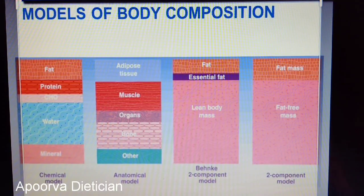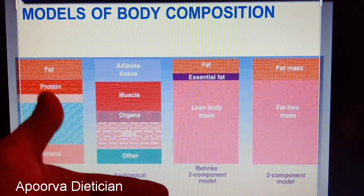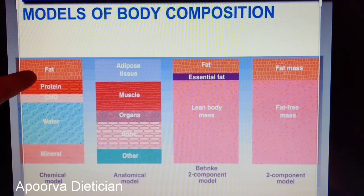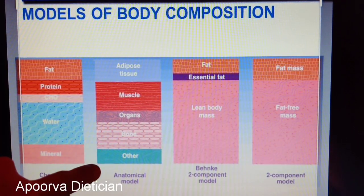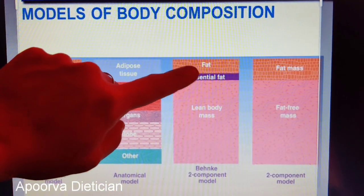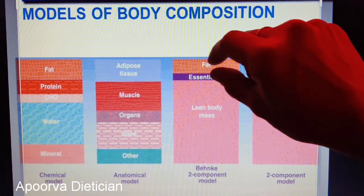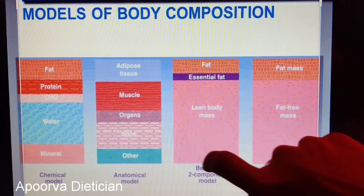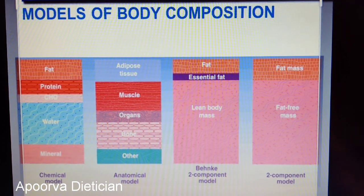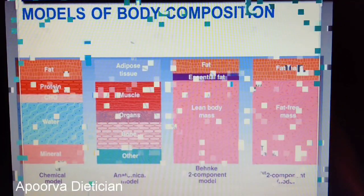Here are different types of models for body composition. Body composition is what all components form a body — there is the chemical model, anatomical model, and two-component models. In the chemical model you can observe different nutrients; in the anatomical model you find tissues, muscles, organs, and bones. You can see there is a distinction between storage fat and essential fat, and lean body mass. Essential fat plus storage fat forms the fat mass, and the remainder is the fat-free mass.